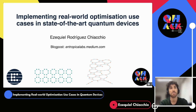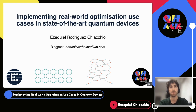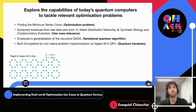Today I'll be telling you about the research collaboration project we had with Greek AT Computing regarding implementing optimization use cases in state-of-the-art quantum devices. All of the stuff I'm going to be telling you about today you can find on our Medium channel, the Entropic Collapse one. The blog post name is the same as the title of the talk, so if you miss anything here you can ask me later in Discord or find all the info there.